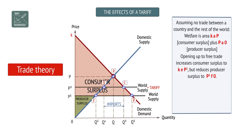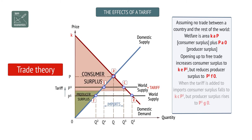When the tariff is added to imports, consumer surplus falls to KCP3, but producer surplus rises to P3G0. The welfare loss is GCEF.